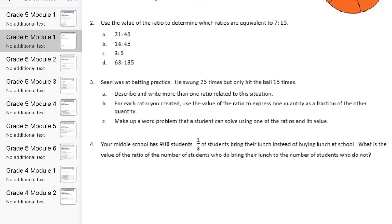Number 2. Use the value of the ratio to determine which ratios are equivalent to 7 to 15. First we have 21 to 45. So we're just going to be basically turning these into fractions and then putting them into simplest form. So 21 and 45, I can divide both of those by 3. 21 divided by 3 is 7 and 45 divided by 3 is 15. So that is 7 to 15, the first one works.